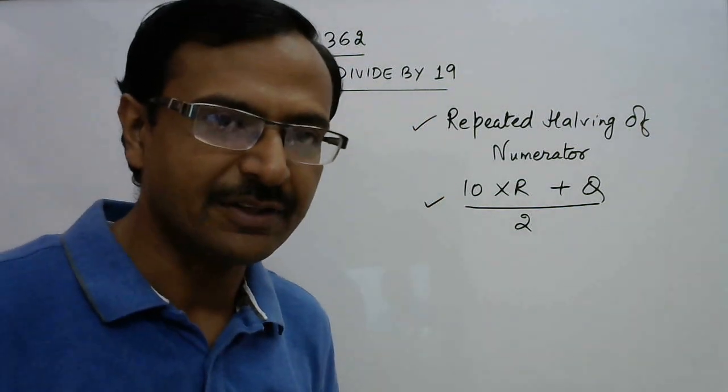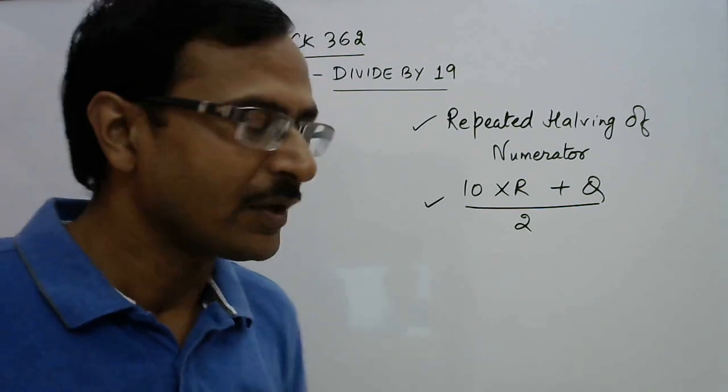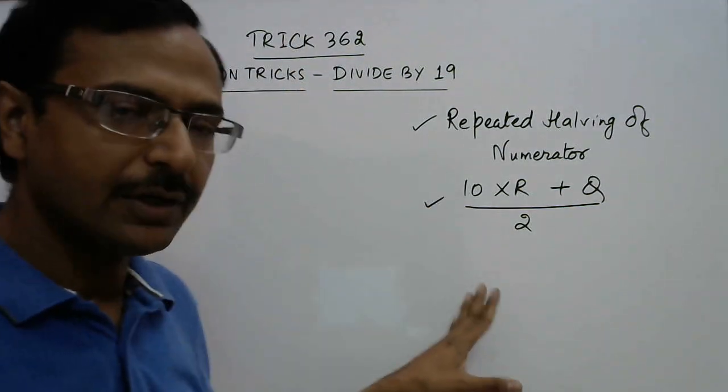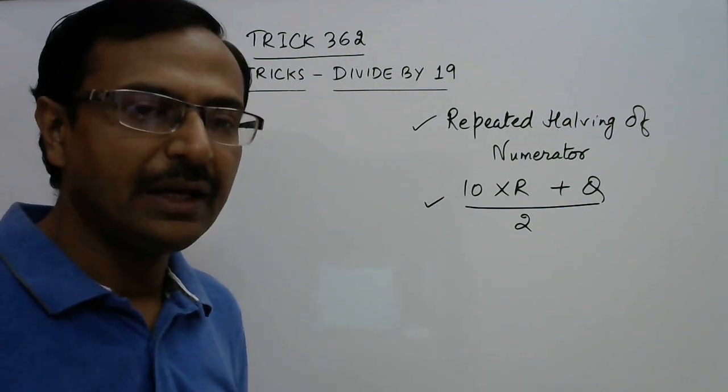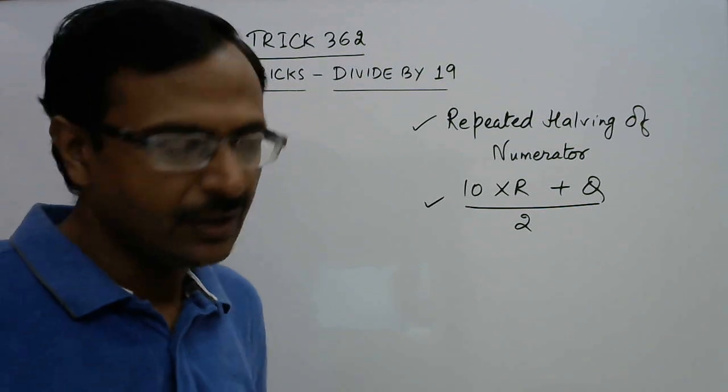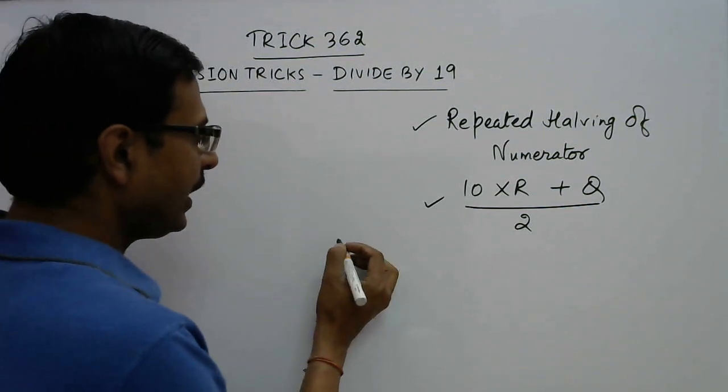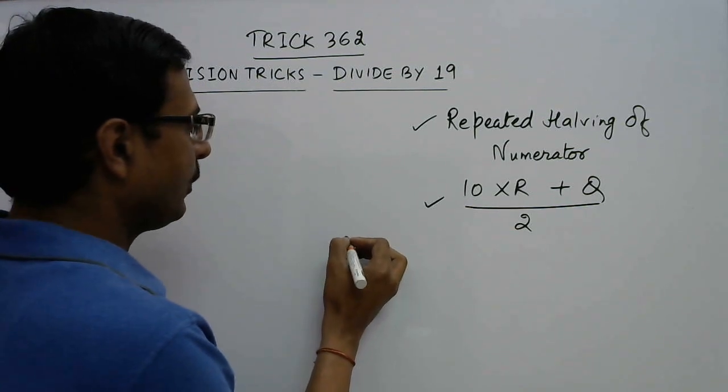Now using the shortcut you can do it in three or four seconds only. How do you do it? Suppose I take the example of 8 upon 19.